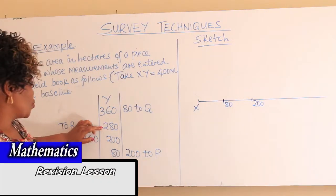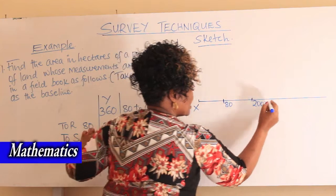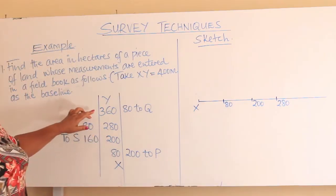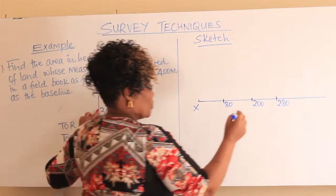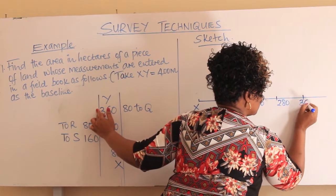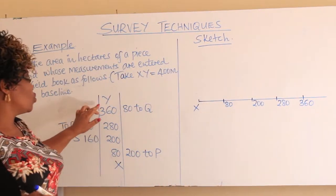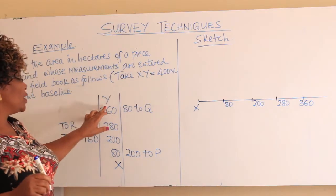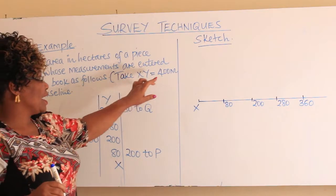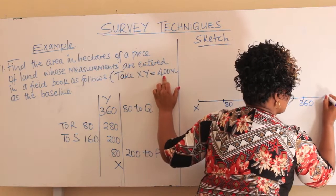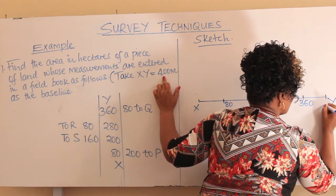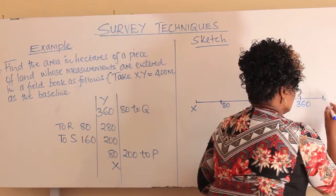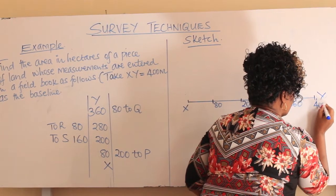We continue. We go to 280 — let's assume 280 is somewhere there. We go to another point, 360. We are continuing with our baseline. And finally, you go to Y, and Y is at 400. Take care of that — some students omit that. So fix your Y here at 400 meters.